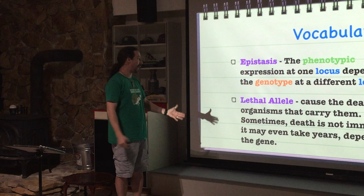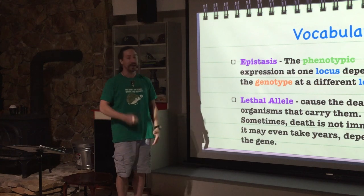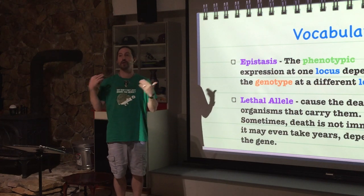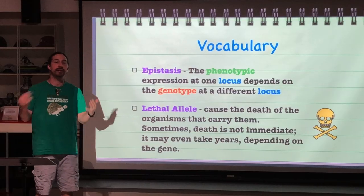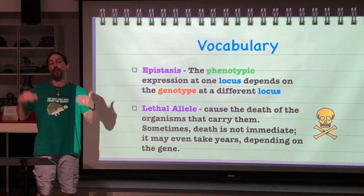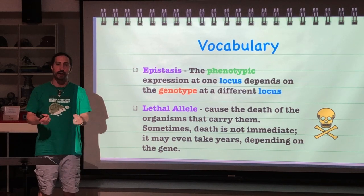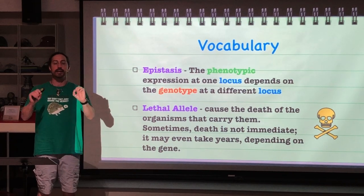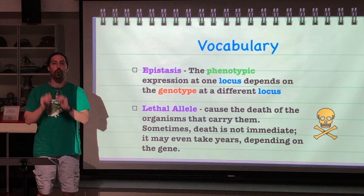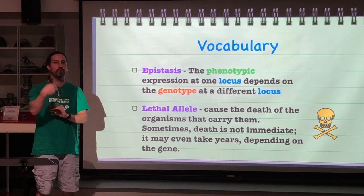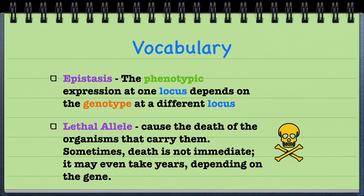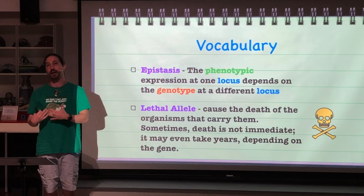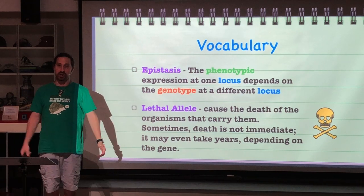Some alleles are actually lethal alleles — they will cause the death of an organism. That death might not be immediate, but the key is that they carry an allele that causes a disease leading to death. These lethal alleles can impact our ratios because sometimes the organism cannot be born, thus changing our expected ratios.